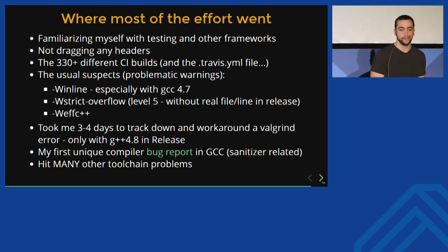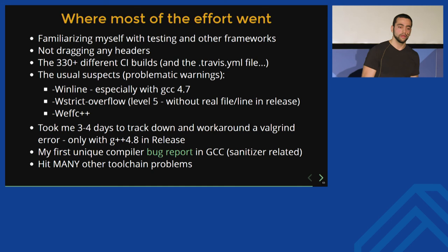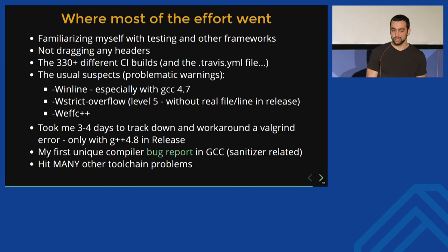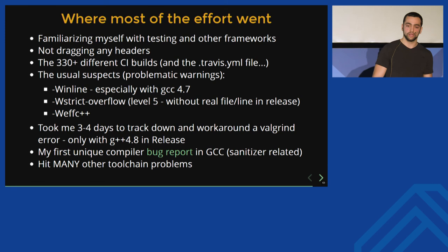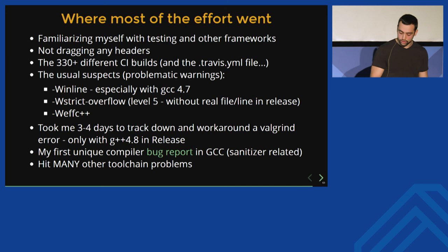Most of the effort went into familiarizing myself with testing in general and other frameworks, and not dragging any headers into the public part. The more than 300 different builds on CI literally took more than a few weeks of non-stop work. There were some funny warnings which took a lot of effort to track down — for example, strict overflow on level 5 only with some versions of GCC, where something gets inlined and you get a warning without an actual line number. I also filed my first compiler bug, which was related to sanitizer integration and has already been fixed. I hit many other toolchain problems.